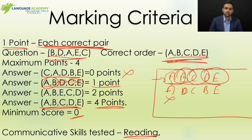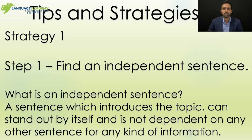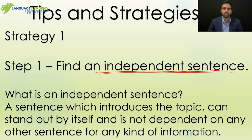Let's look at the task description. This is how your screen will look — you have five sentences. As soon as you get the sentences on your screen, the very first thing you need to do is find an independent sentence. An independent sentence is one which introduces the topic, can stand by itself, and is not dependent on any other sentence for any information. Students are often completely blank about how to start the process.